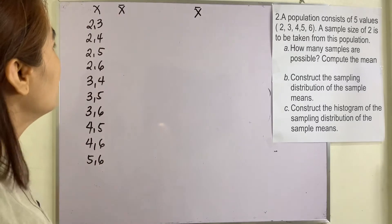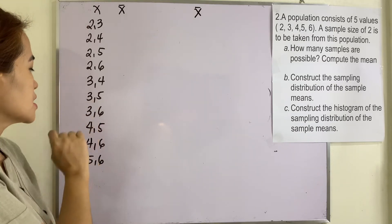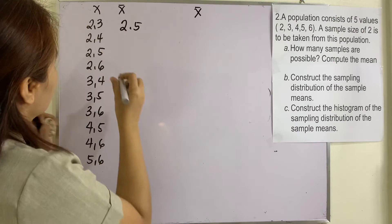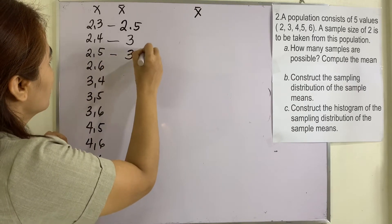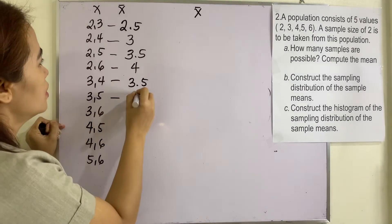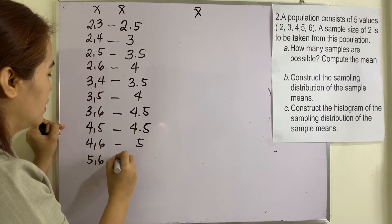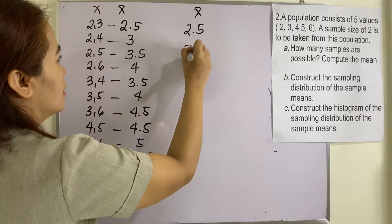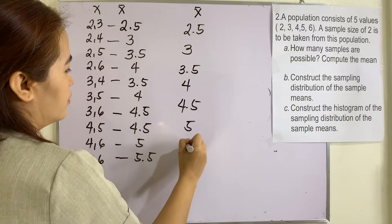Let us now construct the sampling distribution. The 10 combinations are: {2,3}, {2,4}, {2,5}, {2,6}, {3,4}, {3,5}, {3,6}, {4,5}, {4,6}, and {5,6}. Their sample means are: 2.5, 3, 3.5, 4, 3.5, 4, 4.5, 4.5, 5, and 5.5. So the distinct sample means are 2.5, 3, 3.5, 4, 4.5, 5, and 5.5.